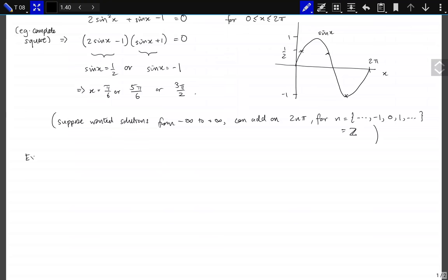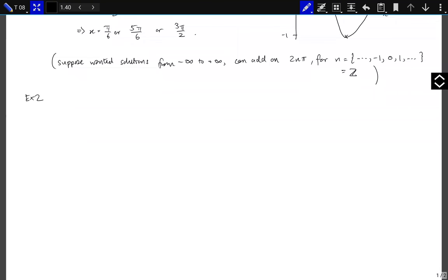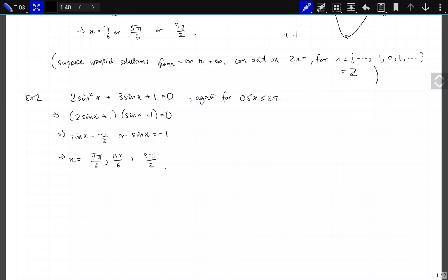So example 2, which in class I gave or will give you to do, very similarly we can solve 2 sin²x plus 3 sin x plus 1 equals 0, again for 0 ≤ x < 2π. It is important to specify the range. This time x is minus a half, and so we want the third and fourth quadrants.